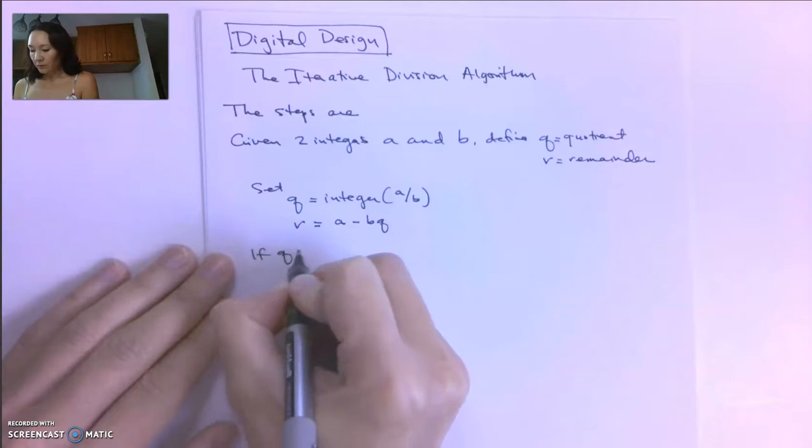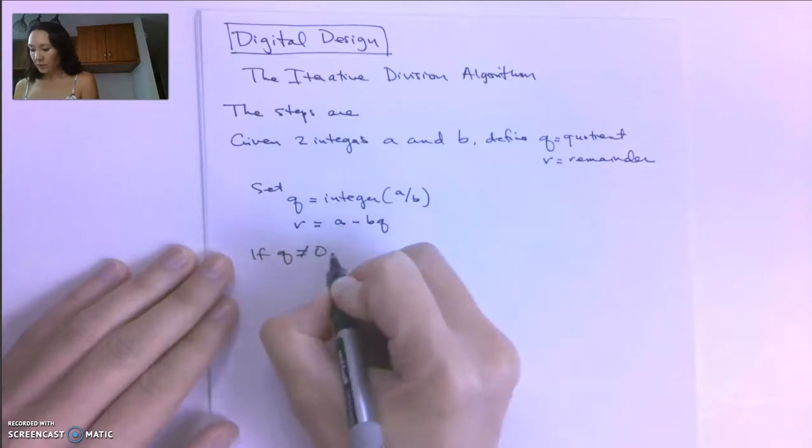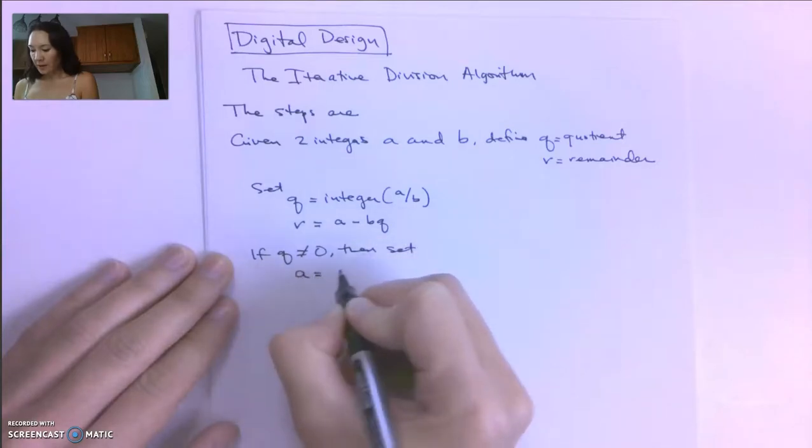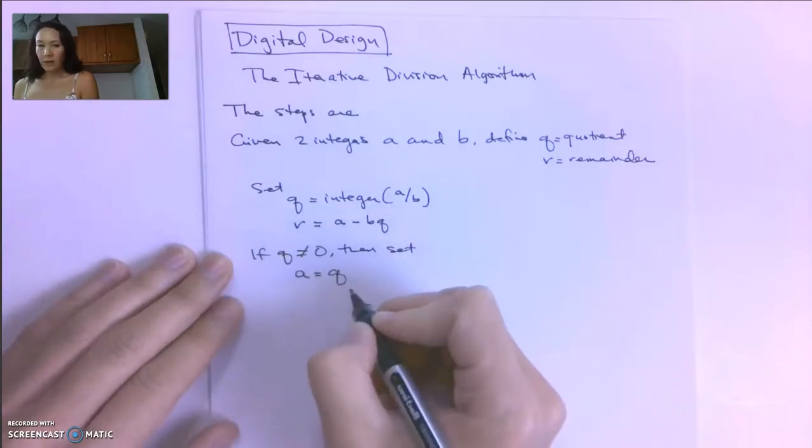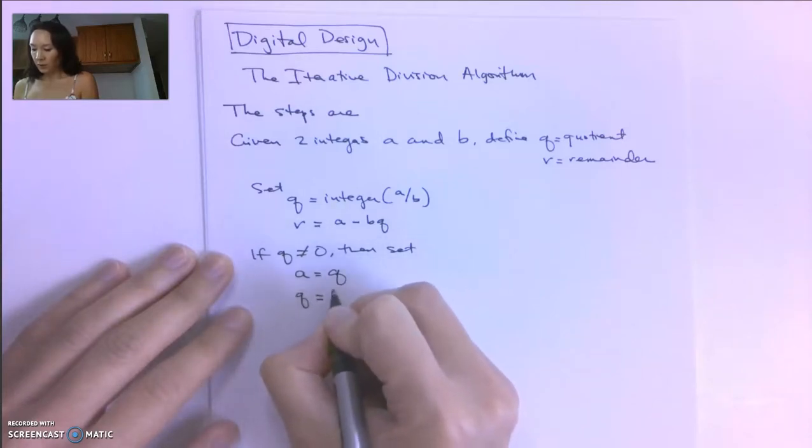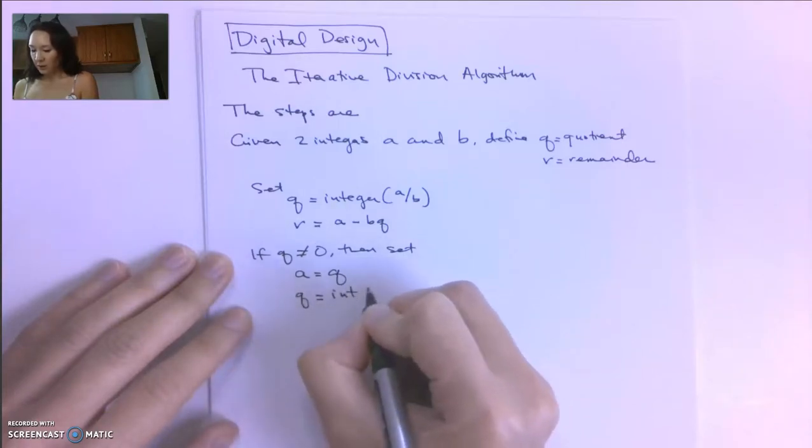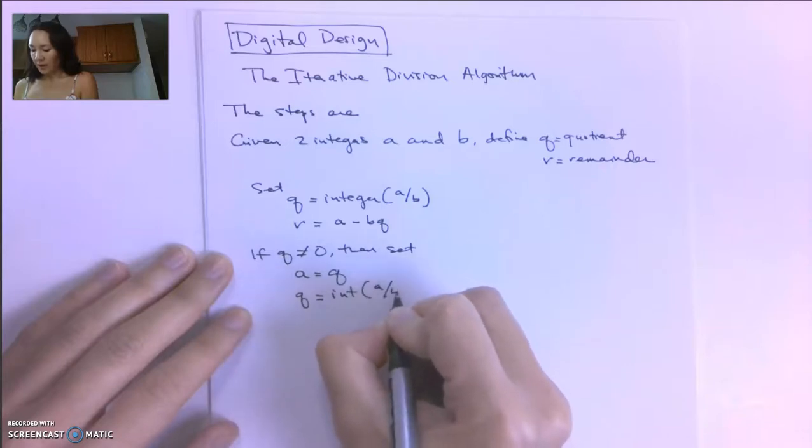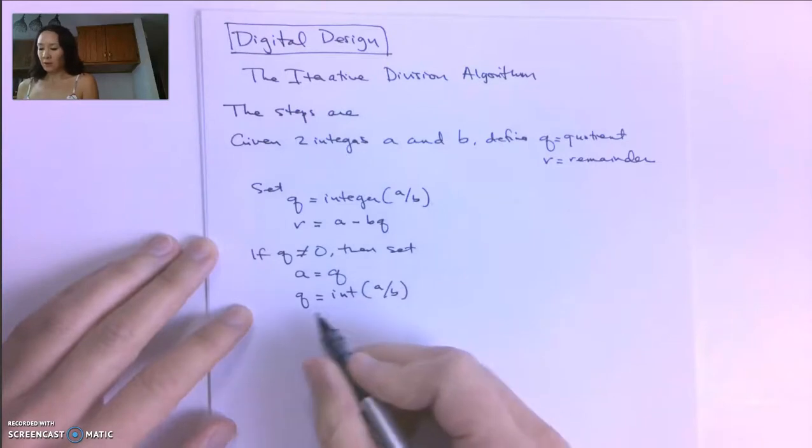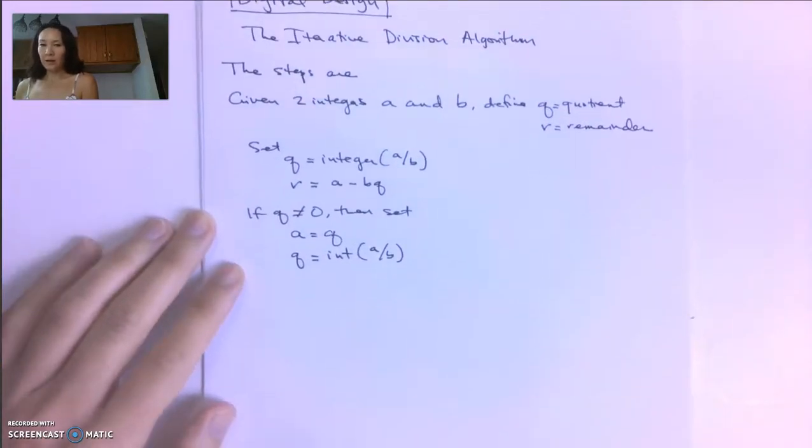So, if Q is not equal to 0, then set A equal to Q. And we're going to set Q equal to, again, the integer part of A divided by B. So the B is going to stay the same, but now we have a new A, which means Q is going to be reassigned.